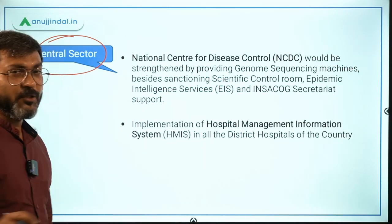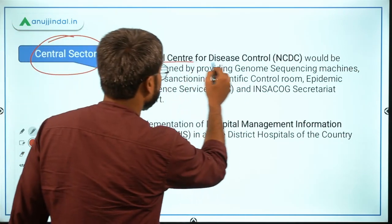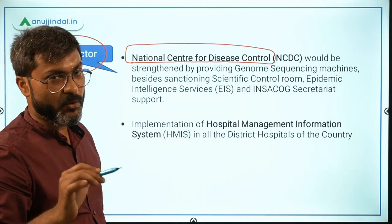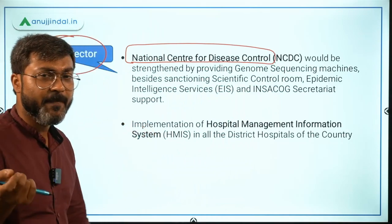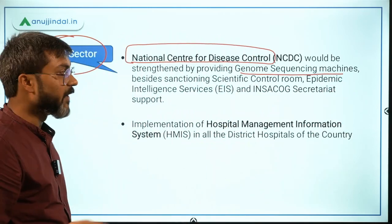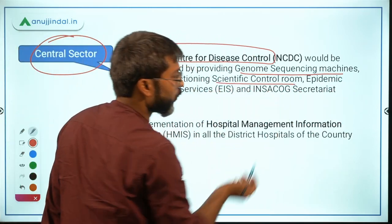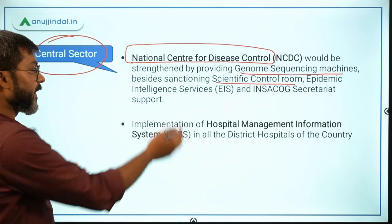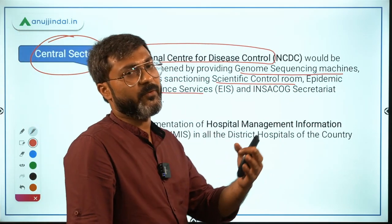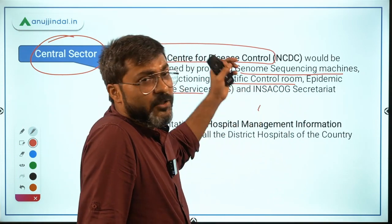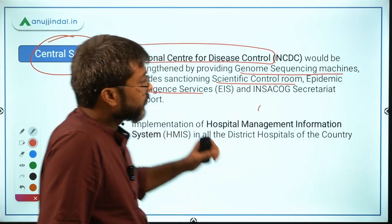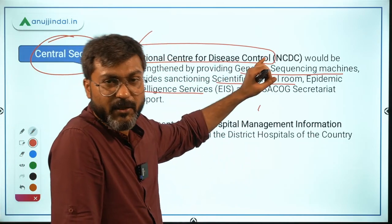The first objective of this phase 2 package is the strengthening of the National Centre for Disease Control (NCDC). They will be provided with genome sequencing machines, a scientific control room, epidemic intelligence services, and other technical support.